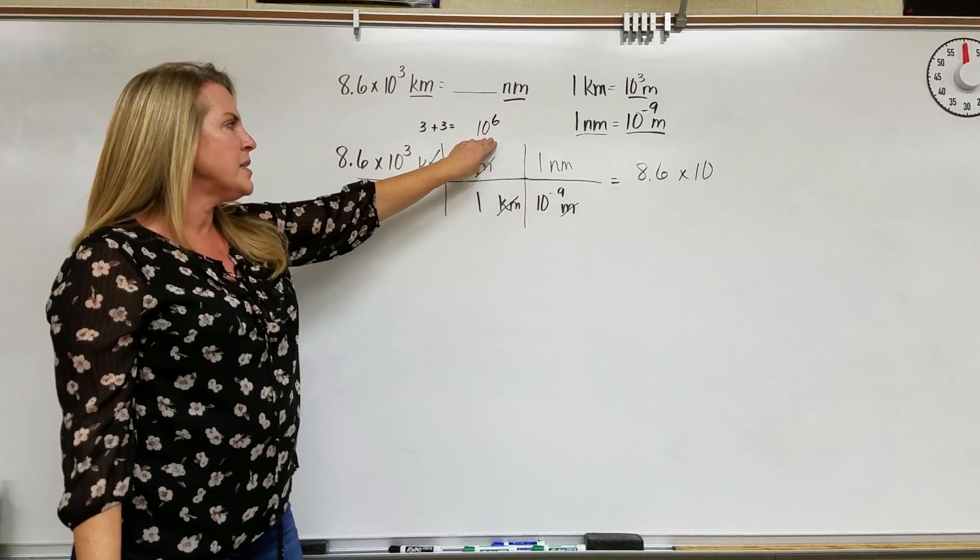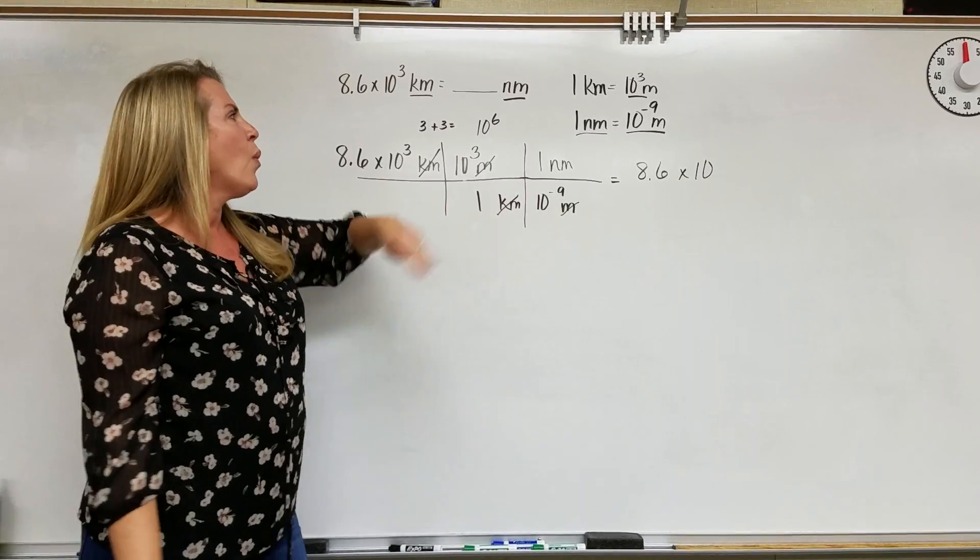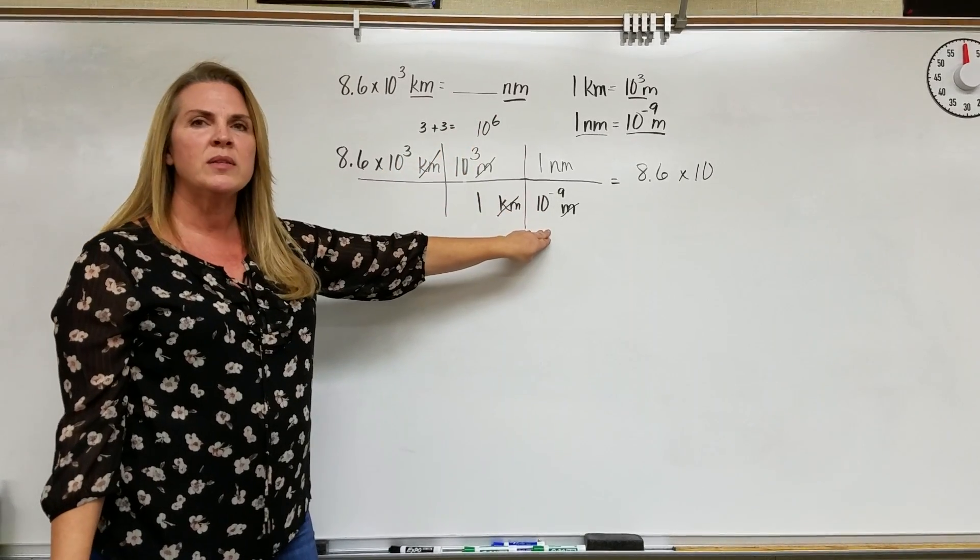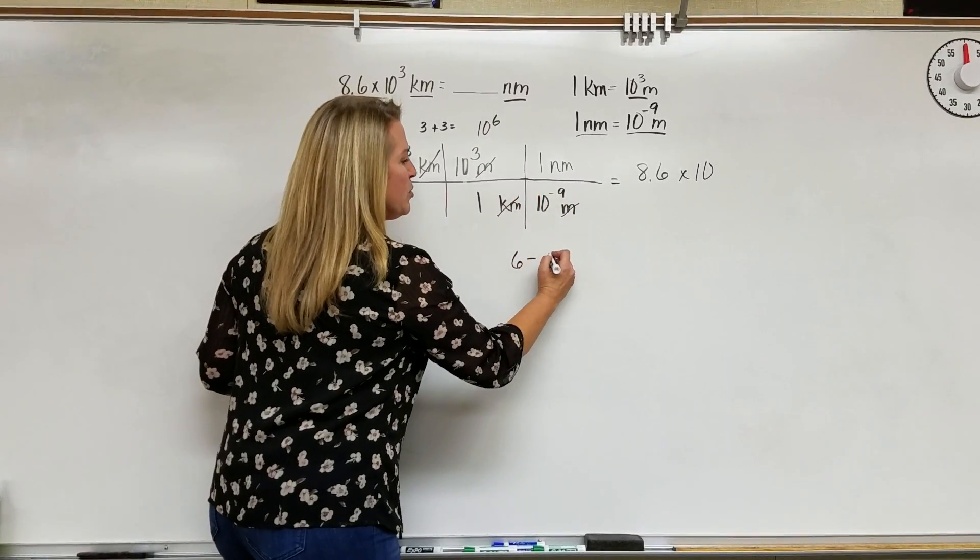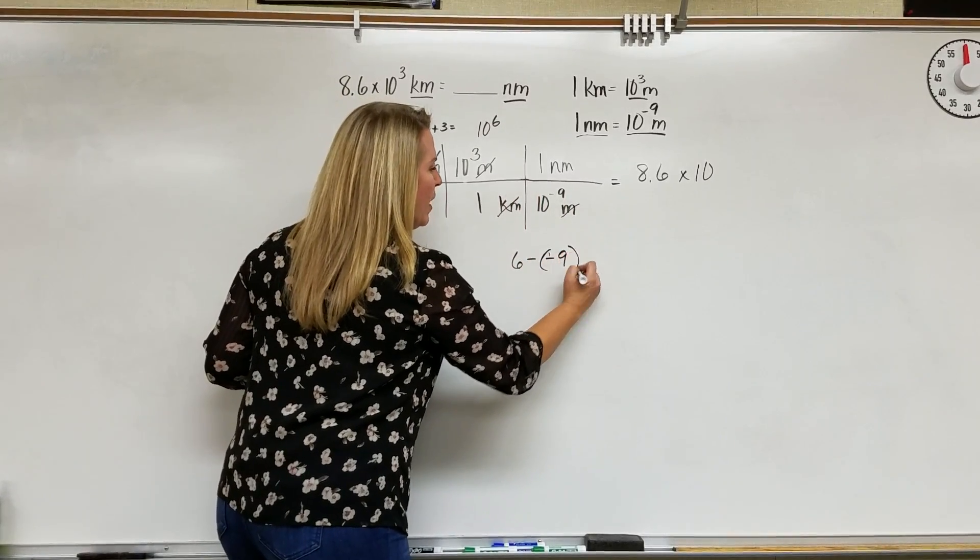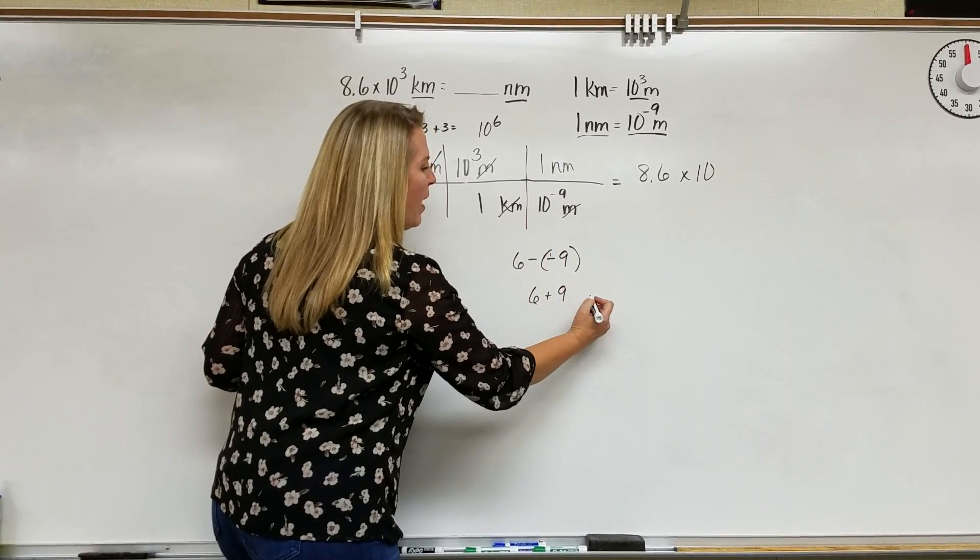Now we're going to take our 10 to the sixth power. We're going to divide it by our 10 to the minus 9. When we divide exponents, we subtract them. So I'm going to take my 6, subtract my negative 9. Negative times a negative is a positive, so we have 6 plus 9.